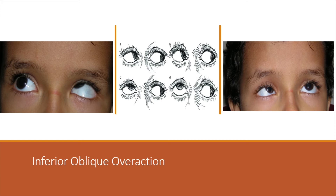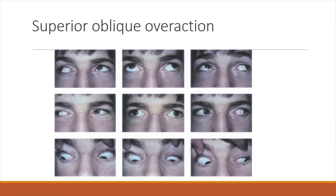In the grading diagram: plus one inferior oblique overaction shows slight elevation, plus two shows the right eye slightly more elevated and abducted compared to the other eye, plus three shows more abducted and more elevated, and plus four is the most severe. Arbitrarily, the difference in deviation between the two eyes corresponds to about 15 degrees for plus one, 30 degrees for plus two, 40–60 degrees for plus three, and about 90 degrees for plus four. Superior oblique overaction is classified similarly.